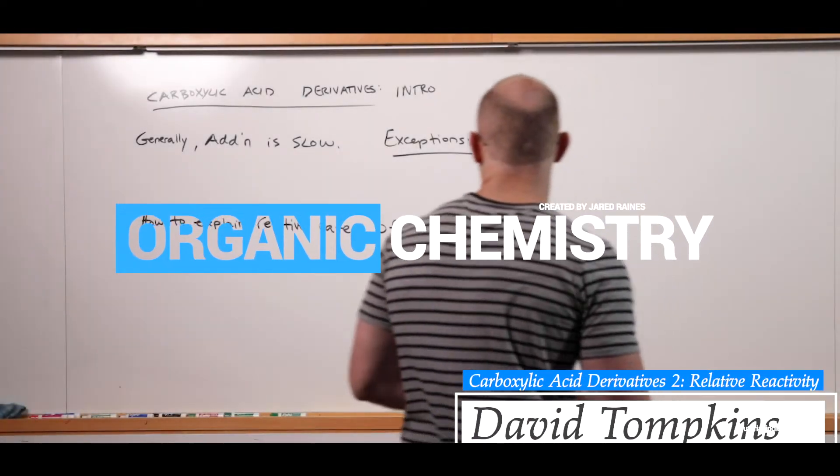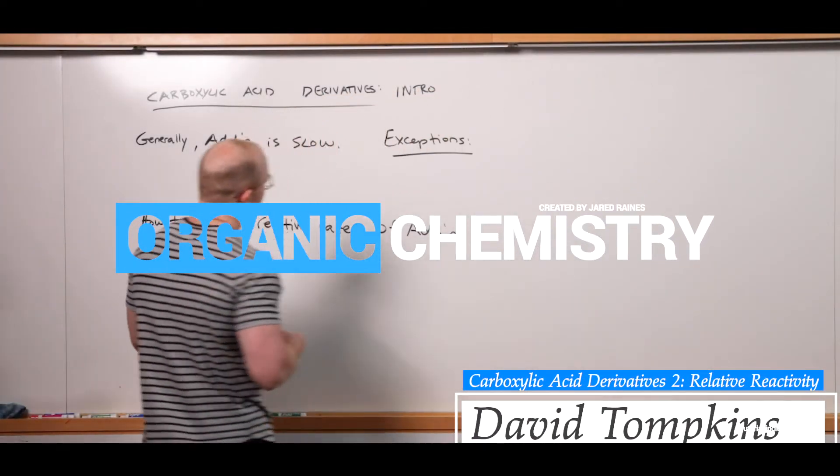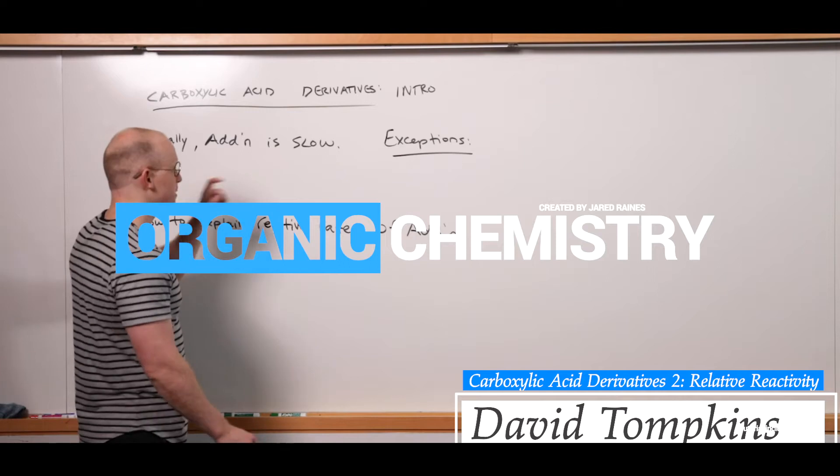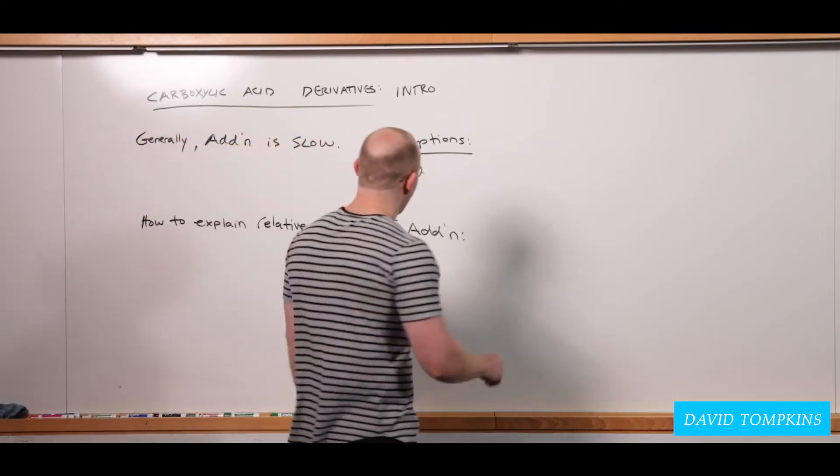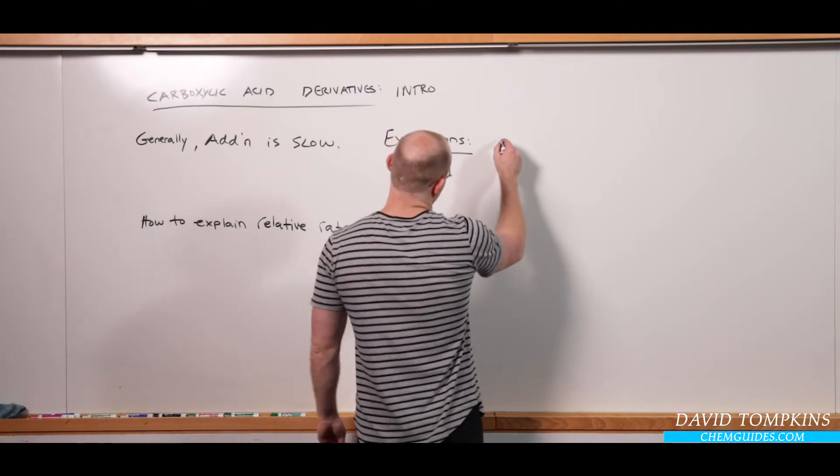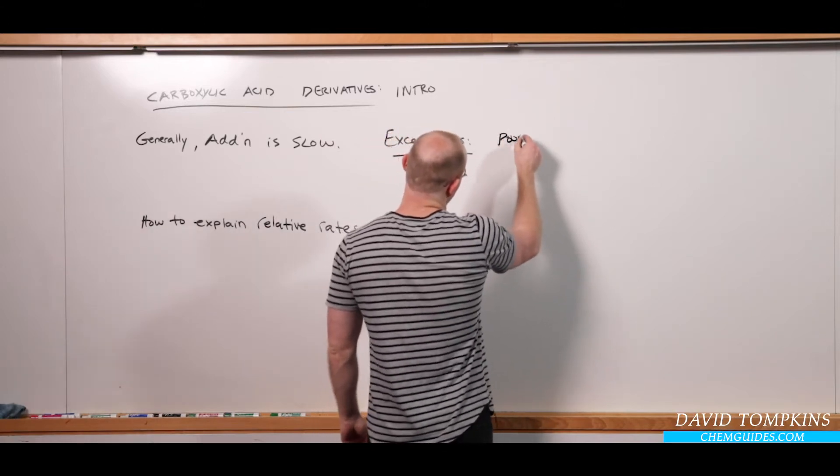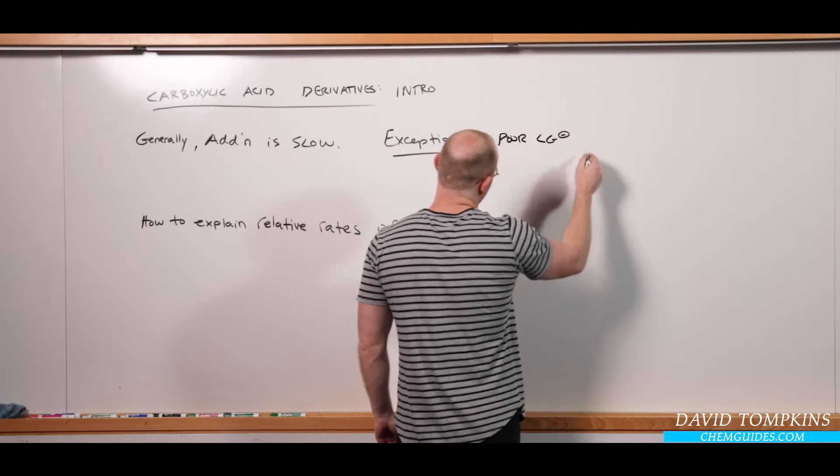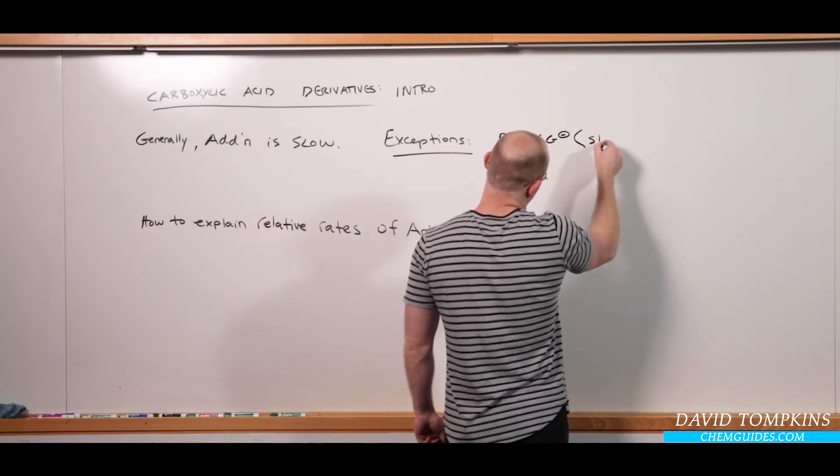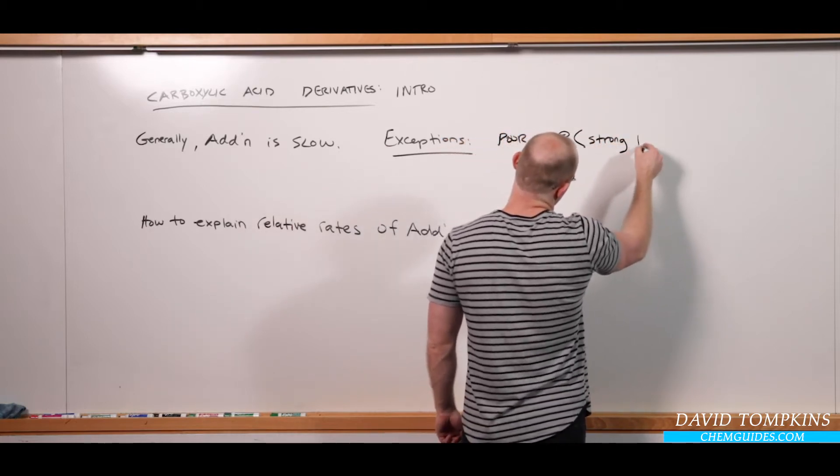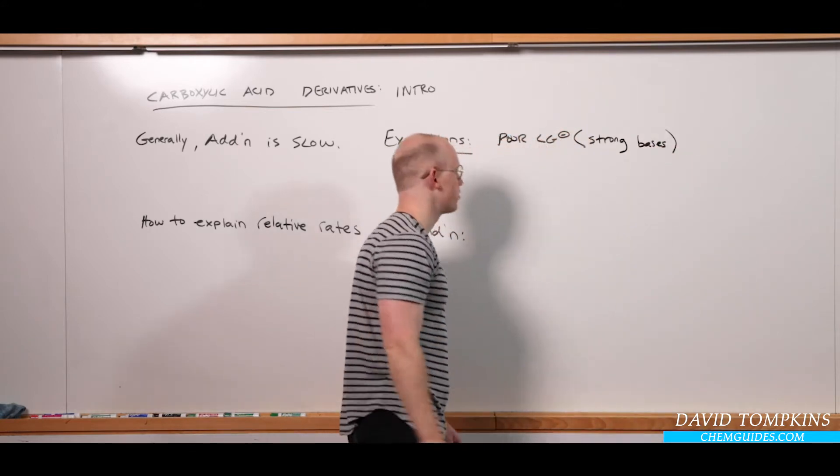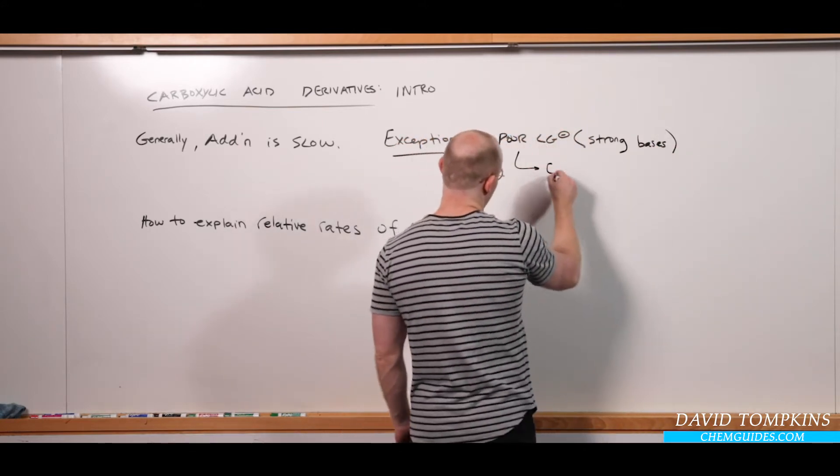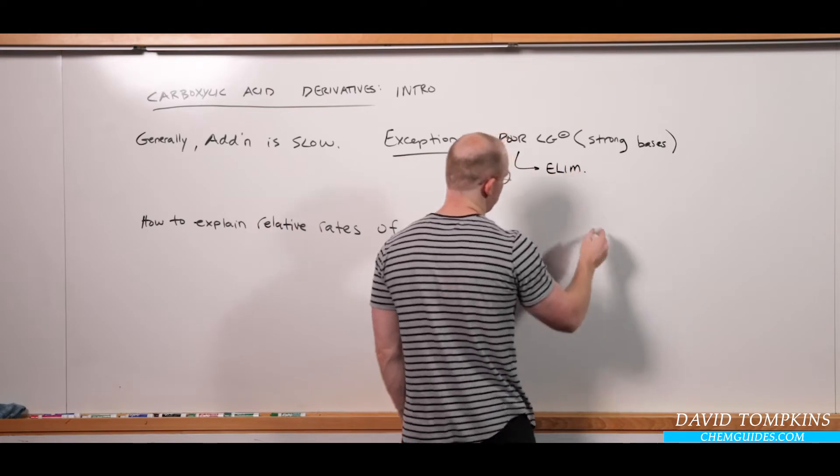I mentioned before that generally the addition step for nucleophilic acyl substitution is the slow step. There are some exceptions to this when you have a poor leaving group. Things that are moderate or strong bases will leave very slowly, and that will cause the elimination step to be rate-limiting.